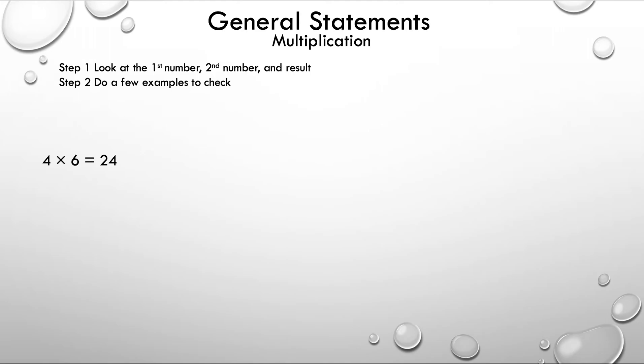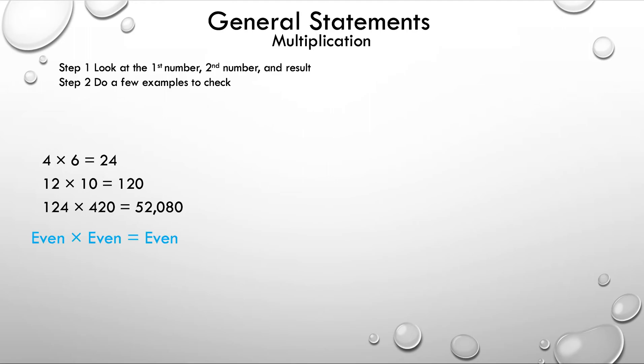We have 4 times 6 equals 24. Can you come up with a general statement with just one example? No — you need to do a few more. So we do 12 times 10 equals 120, and 124 times 420 equals 52,080. With three different examples, you can come up with the general statement: even times even is equal to even.